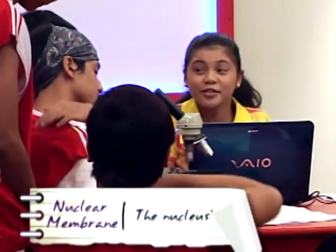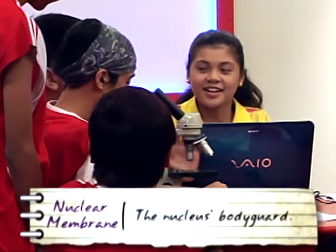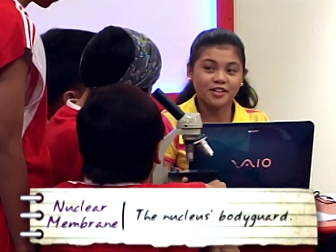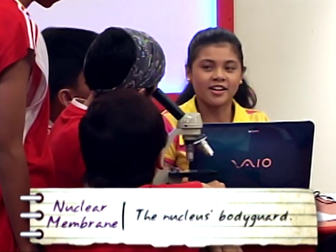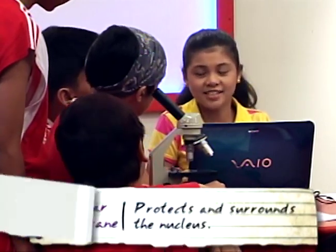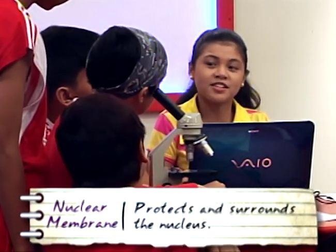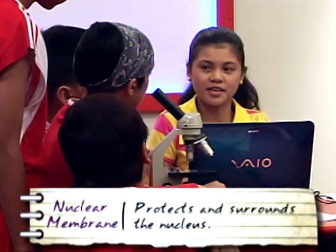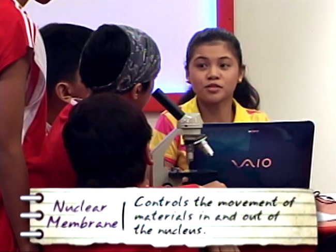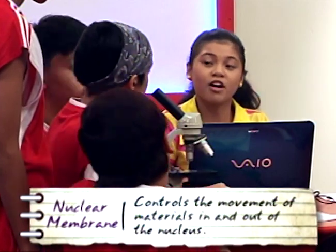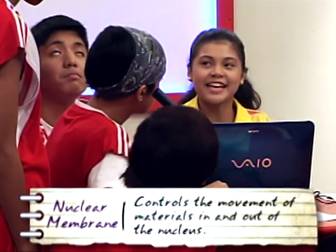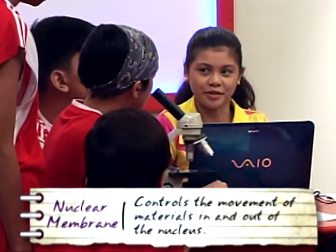The nuclear membrane is the nucleus's bodyguard. It protects and surrounds the nucleus. It also controls the movement of material in and out of the nucleus.